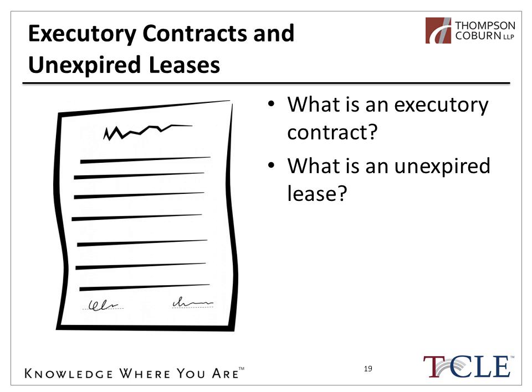It may be easier to understand what an executory contract is by understanding what it's not. If a bankruptcy is filed after one party has performed, there's no longer open performance on both sides of the agreement — the performance remains due from only one party. Under those circumstances, that agreement can be impacted by the bankruptcy; the performing party that wasn't paid has a claim, but that's not an agreement that could be assumed or rejected in bankruptcy. An unexpired lease is one that remains with a term on it at the time of the filing. A contract with no further performance remaining, or a lease that's expired or terminated, is not a dynamic enough relationship for the rules of assumption and rejection to apply.